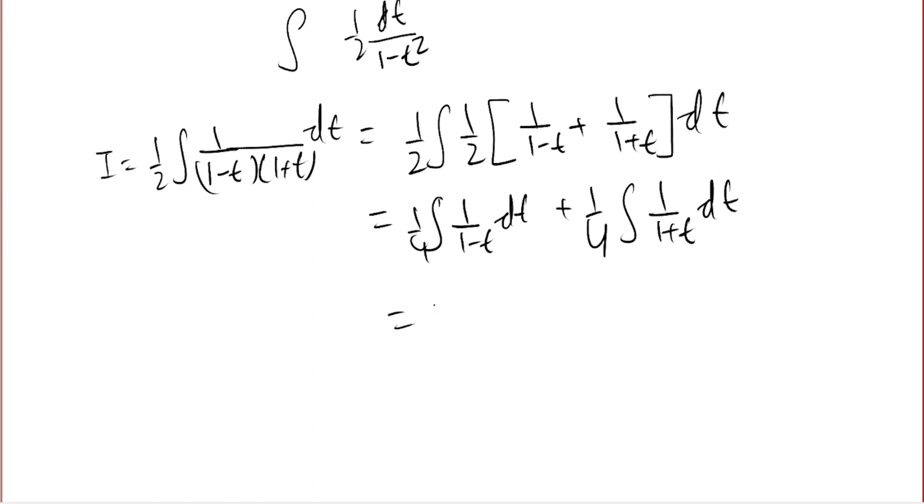And if you integrate this, you get minus 1 over 2 times ln of 1 minus t plus 1 over 4 ln of 1 plus t plus c. And we know this ln of a minus ln of b is ln of 1 plus t over 1 minus t, which gives 1 over 4 plus c.